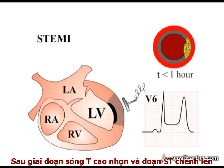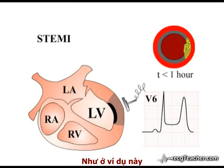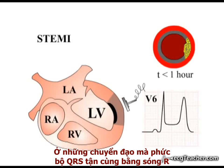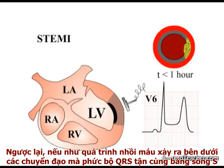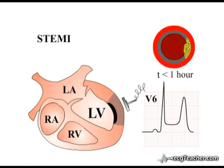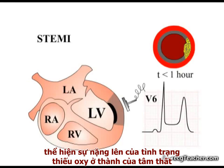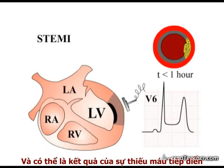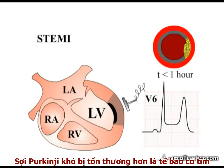In the absence of treatment, peaked T waves and ST segment elevation are followed by alterations to the terminal portion of the QRS complex. In a lead in which the QRS complex ends with an R wave, the R wave rises in amplitude. In contrast, if infarction occurs under leads in which the QRS complex ends with an S wave, the S wave may disappear. These transient changes to the terminal portion of the QRS complex reflect worsening crisis in the oxygen-starved ventricular wall and probably result from progressive ischemia and necrosis of the Purkinje fibers, a tissue more resistant to death than working muscle.